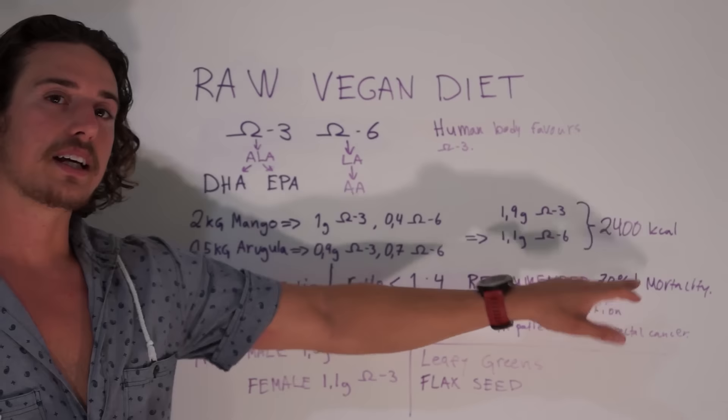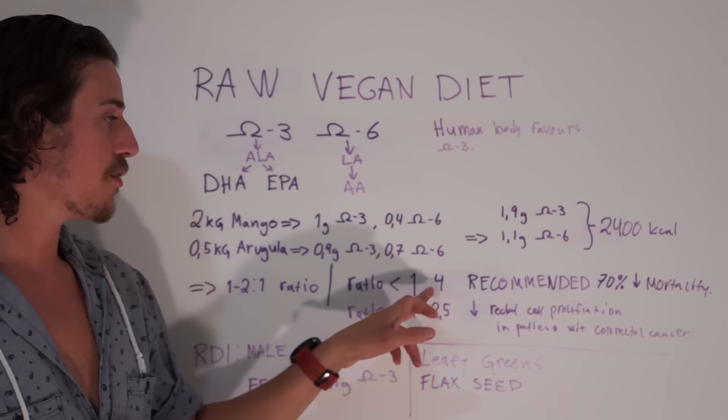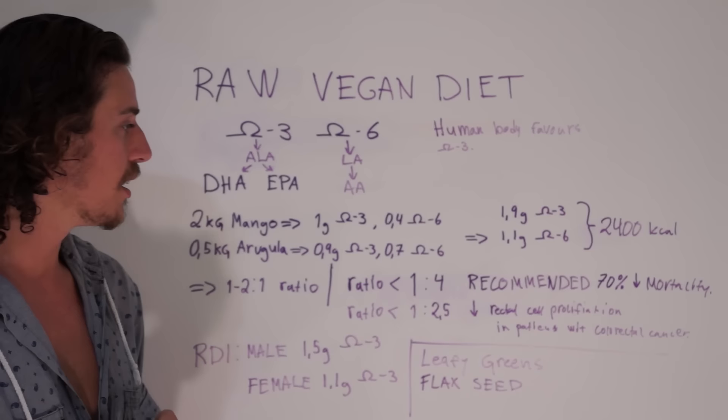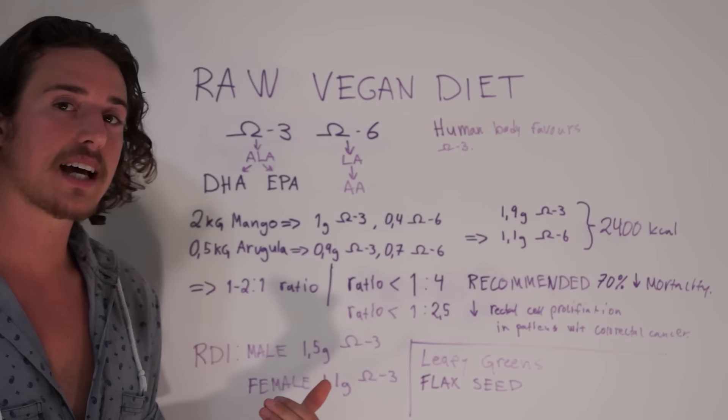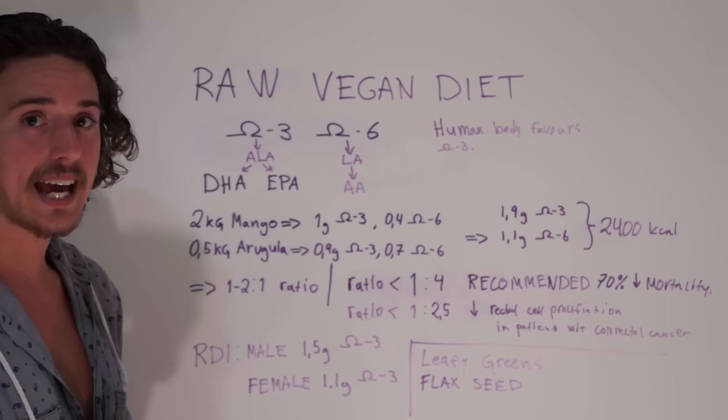If you go under this, it's associated with a 7% decrease in mortality. That's pretty big. It's really important to be under 1:4 omega-6 to omega-3. If you go even lower to 1:2.5, we have reduced rectal cell proliferation in patients with colorectal cancer. If you go even lower, there is even evidence that supports it's helping the body fight some types of cancer.